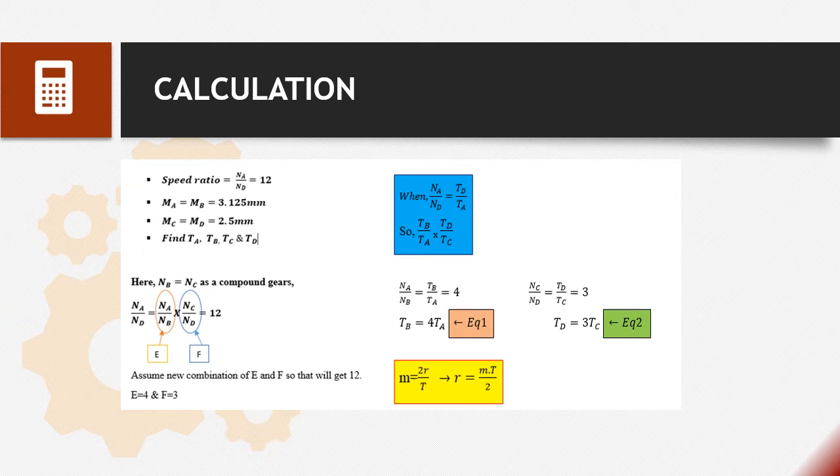When NA over ND equals TD over TA, we will get TB over TA multiplied with TD over TC. NA over NB equals TB over TA equals 4, so we get equation 1: TB equals 4TA. And NC over ND equals TD over TC equals 3, so equation 2 is TD equals 3TC.